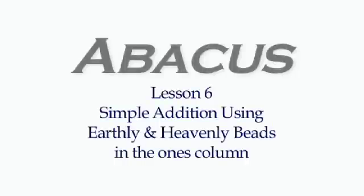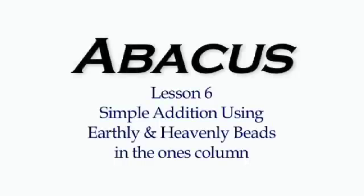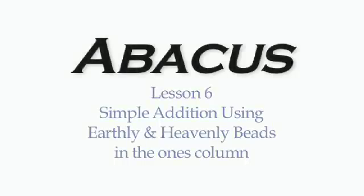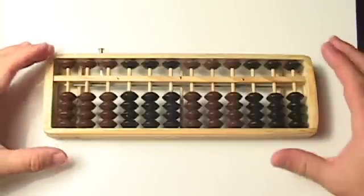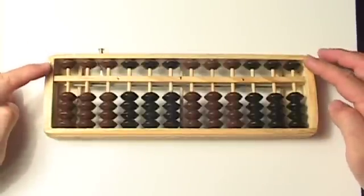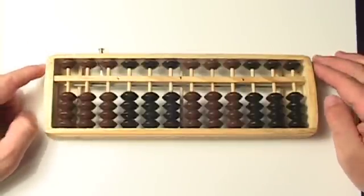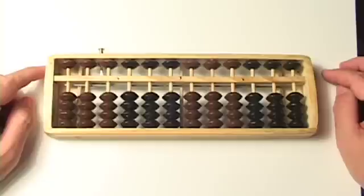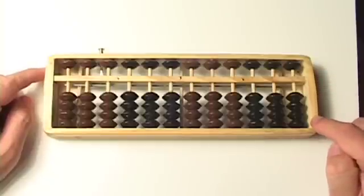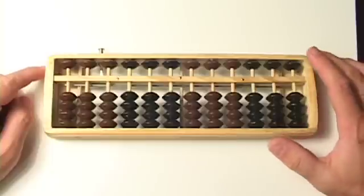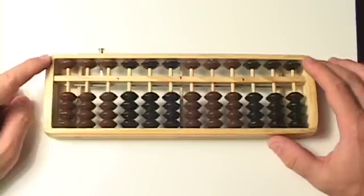Simple addition using the earthly and the heavenly beads. Now you've mastered addition using only the earthly beads, we're going to start using our heavenly beads. If you remember, the earthly beads are only worth one and the heavenly beads are worth five. The most that we can have in any column at any one time is nine.